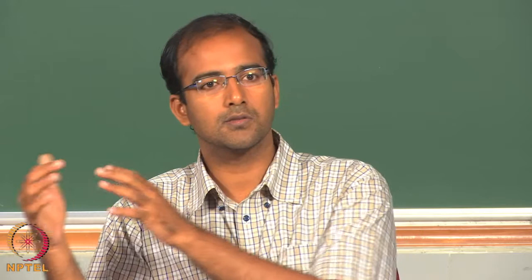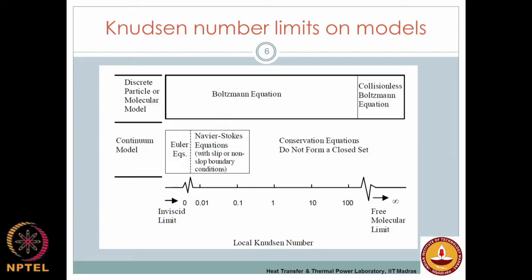The Boltzmann equation has two parts: an advection term — similar to the advection term in the Navier-Stokes equation — and a collision term. Taking higher-order moments of the Boltzmann equation recovers the Navier-Stokes equation; some advection also comes out of the collision term because the collision term plays the role of both advecting the fluid and diffusing it.